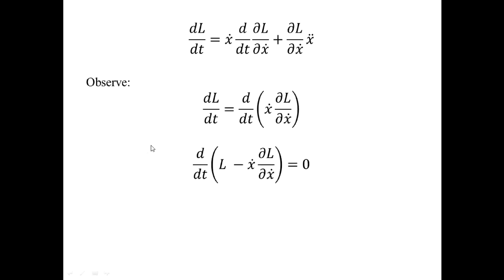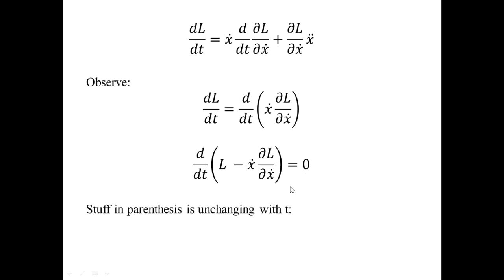With that observation, the derivation is almost complete. I take the entire right-hand side and move it to the left, then factor out the differentiation operator d/dt. What I have is d/dt of L minus ẋ times ∂L/∂ẋ equals zero. This means the quantity in parentheses — L minus ẋ times ∂L/∂ẋ — is unchanging with respect to t, so it equals a constant c. That is the Beltrami identity.